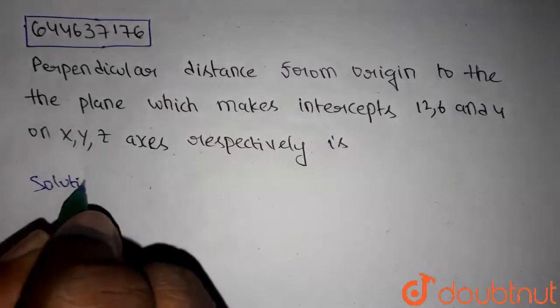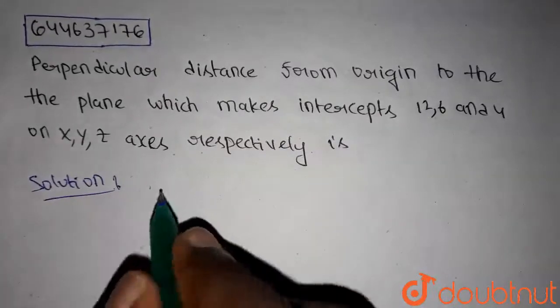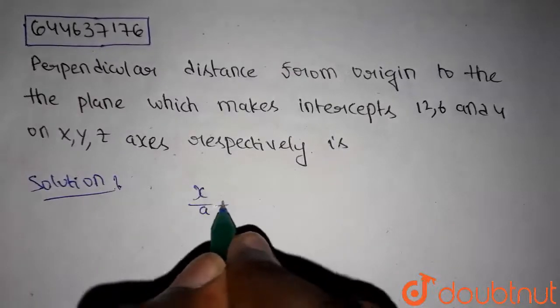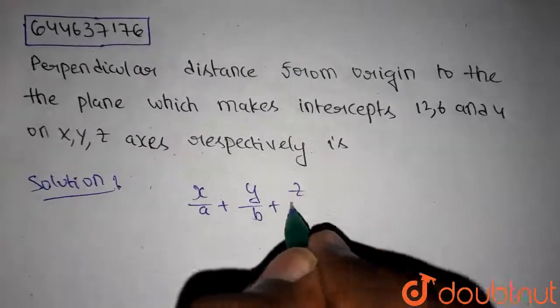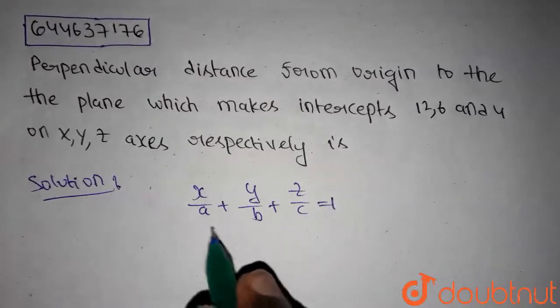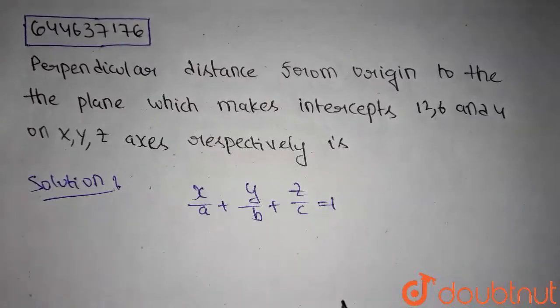Let's get into the solution. We know that the intercept form of a plane is given by x/a + y/b + z/c = 1 where a, b, c are intercepts on x, y and z axis respectively.